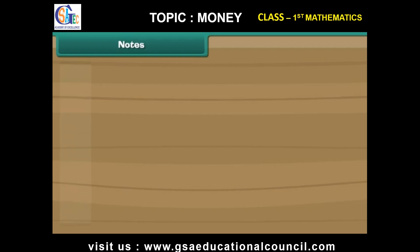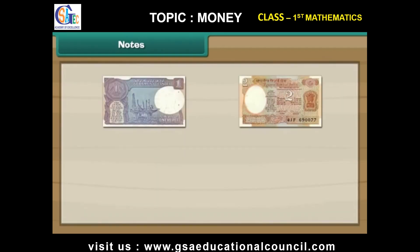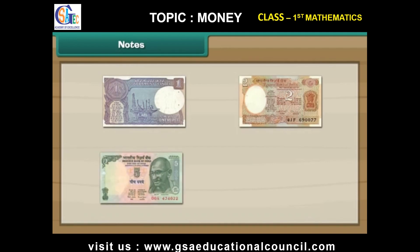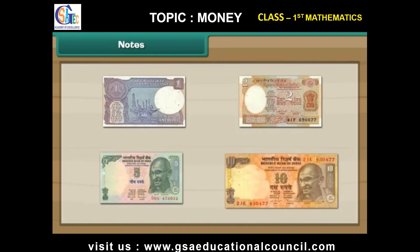Look at the note. This is a 1 rupee note. This is a 2 rupee note. This is a 5 rupee note. This is a 10 rupee note.